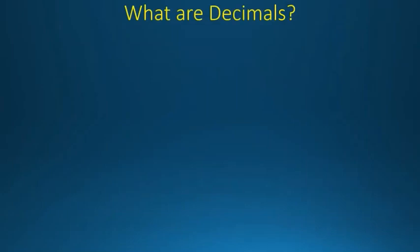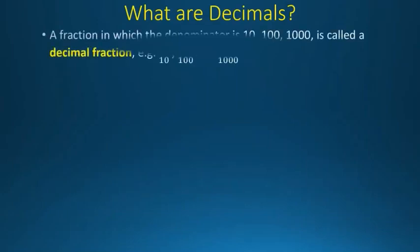First we will learn about what are decimals. A fraction in which the denominator is 10, 100, or 1000 is called a decimal fraction. Some examples are 1/10, 3/100, or 45/1000.